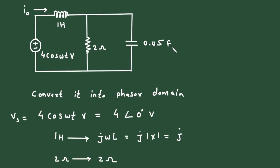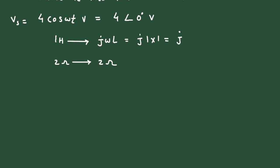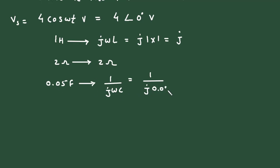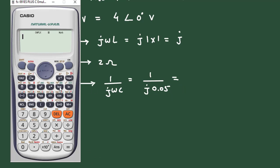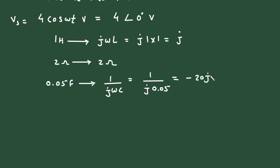The 0.05 farad capacitor implies 1/(jωC). With omega equal to 1 and C equal to 0.05, this is 1/(j×1×0.05). Solving in the calculator gives minus 20j ohm.